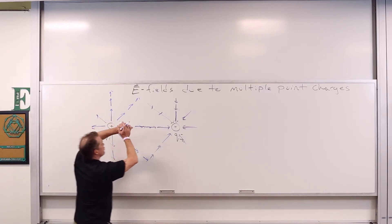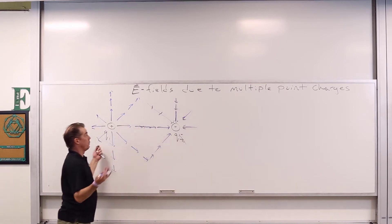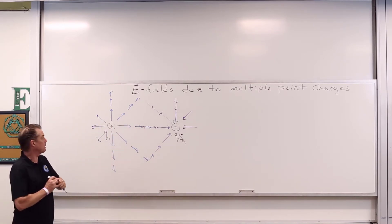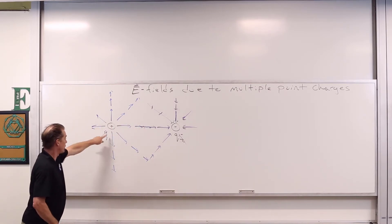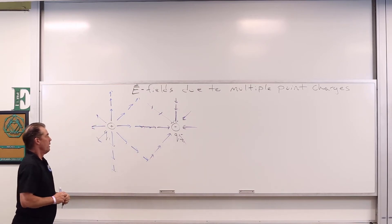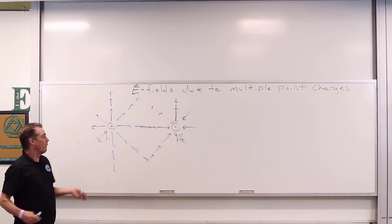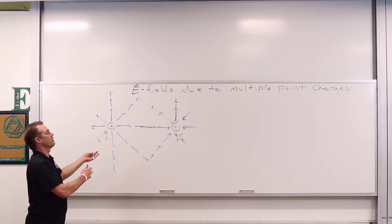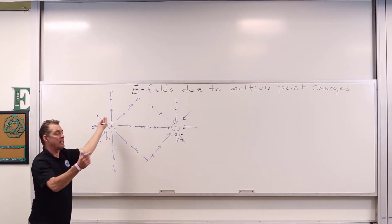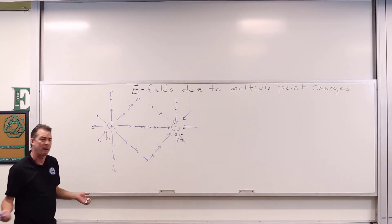If we start to draw them both all over in space, we'd see that eventually everywhere they're overlapping — the electric fields due to Q1 overlap with the electric fields due to Q2. So what does the overall field look like? Well, it looks like the vector sum of the individual fields throughout space.